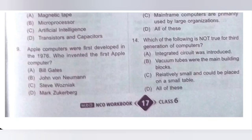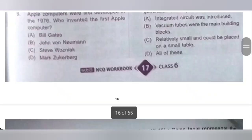14th question: Which of the following is not true for the 3rd generation of computers? A. Integrated circuit was introduced — correct. B. Vacuum tubes were the main building blocks — incorrect, because vacuum tubes were used by the 1st generation of computers. C. Relatively small and could be placed on a small table — correct. Option B is incorrect regarding 3rd generation computers, so option B is the correct answer.